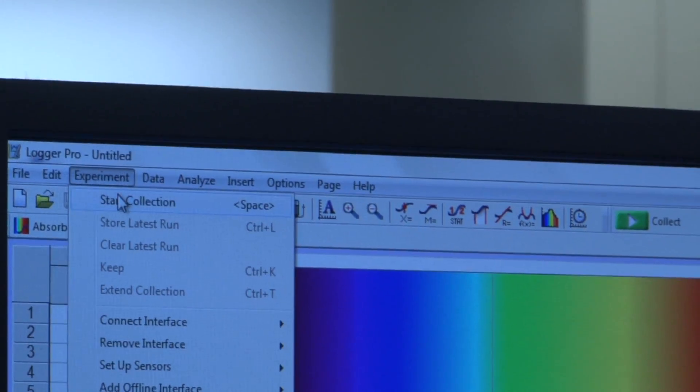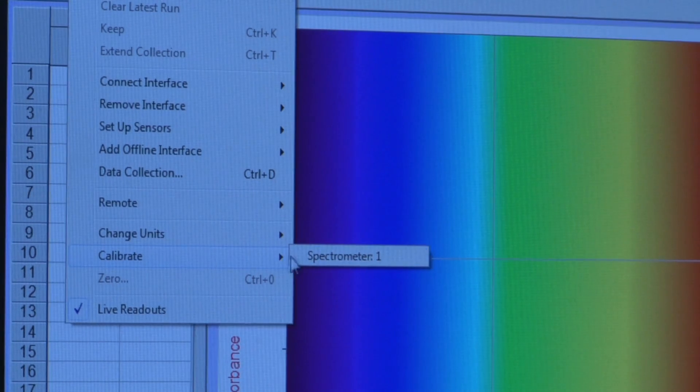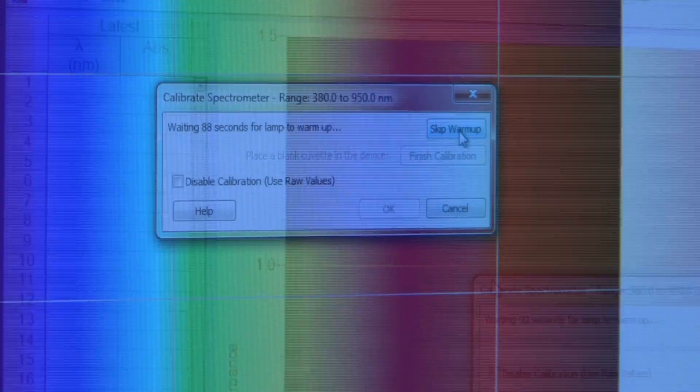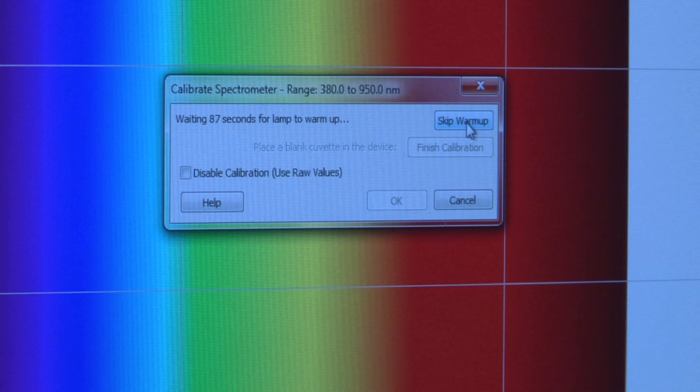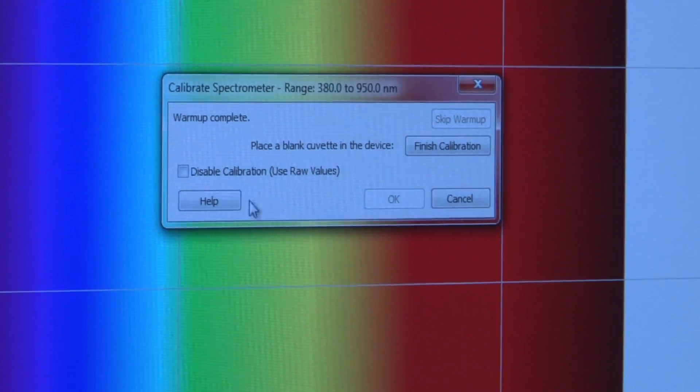From the experiment drop down menu select calibrate and then spectrometer 1. A pop up window will notify you that the program is waiting for the lamp to warm up. If the lamp is already warm you can skip the warm up. Otherwise wait until it is complete.